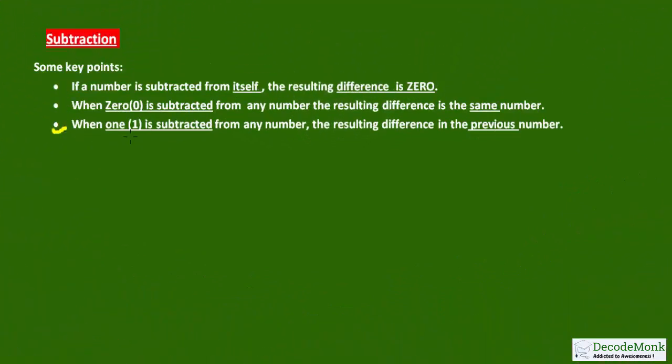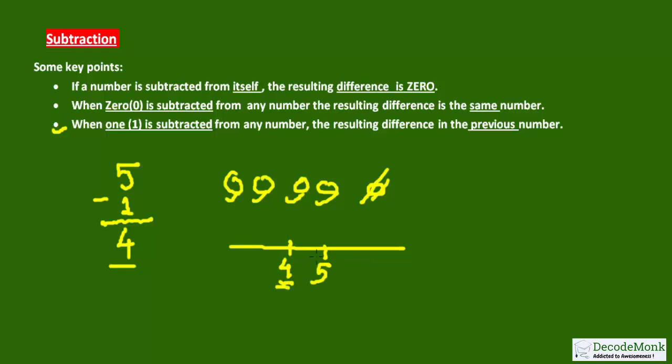Coming to the third point, it says when 1 is subtracted from any number, the resulting difference is the previous number. This means if you subtract 1 from 5, the result will be 5 minus 1, which equals 4. There are 5 apples: 1, 2, 3, 4, 5. You take away 1 apple, so you are left with 1, 2, 3, 4. So 5 minus 1 is 4.